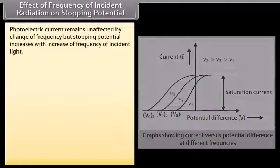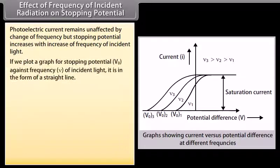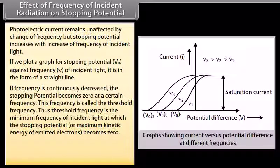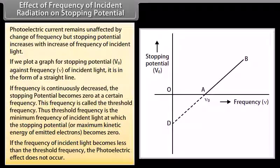Photoelectric current remains unaffected by change of frequency, but stopping potential increases with increasing frequency of incident light. A graph of stopping potential V₀ against frequency ν is a straight line. If frequency is continuously decreased, stopping potential becomes zero at a certain frequency called the threshold frequency — the minimum frequency at which the stopping potential or maximum kinetic energy of emitted electrons becomes zero. If frequency falls below threshold, the photoelectric effect does not occur.